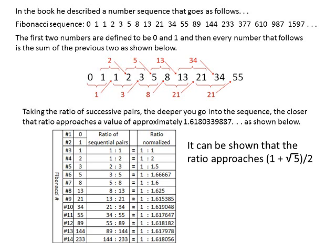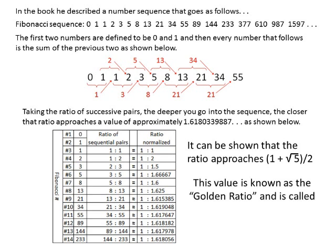Now, it can be shown that the ratio approaches 1 plus the square root of 5, divided by 2. This value is known as the golden ratio and is called phi.